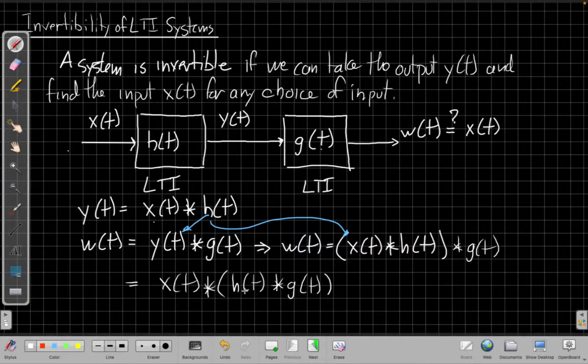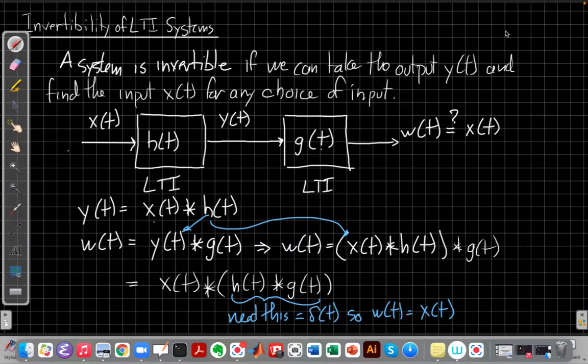convolution in parentheses to be equal to the thing that doesn't change, that won't change x(t) when I convolve with it. Well, what can I convolve with that doesn't change it? Pause the video for a second, think about it, and come back. Yes, convolving h and g with t has to give me an impulse, right? An impulse is the thing I convolve with that leaves the signal unchanged.